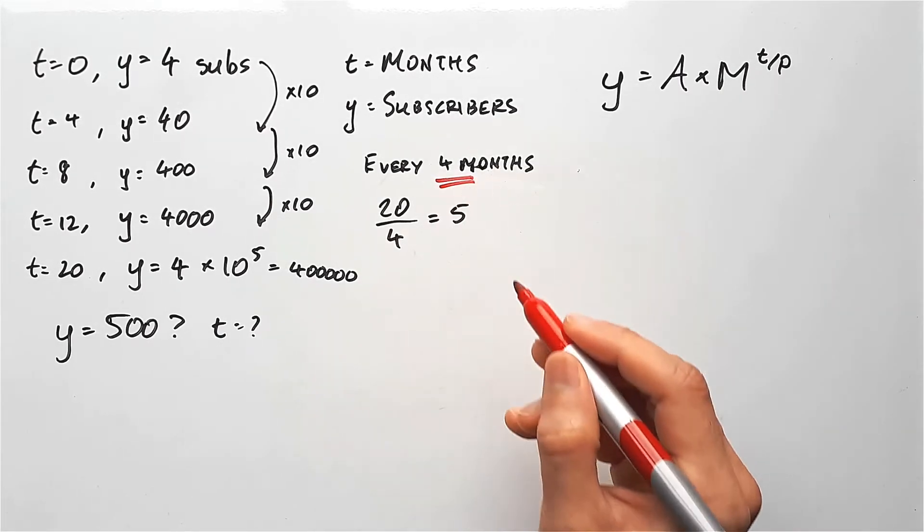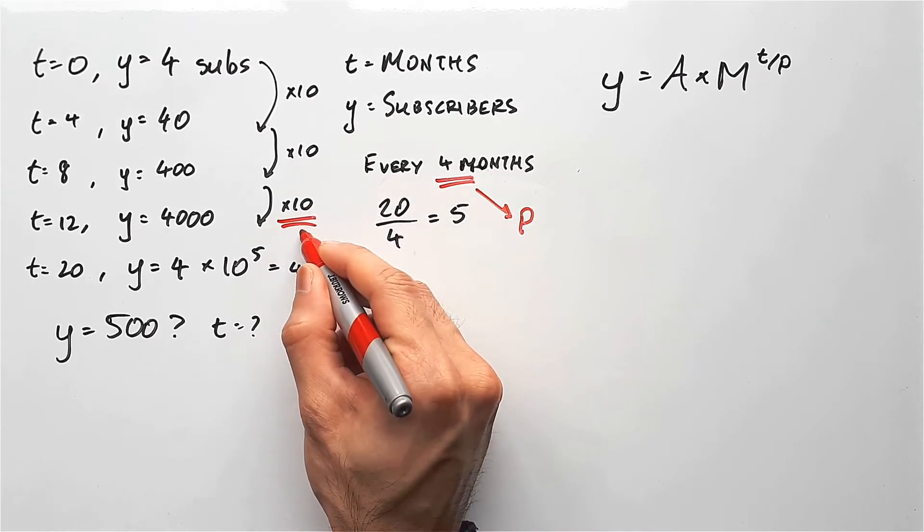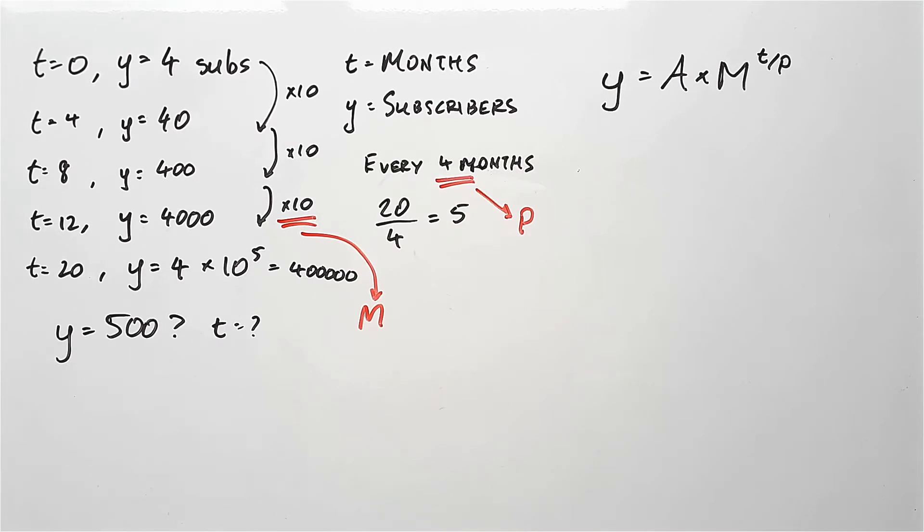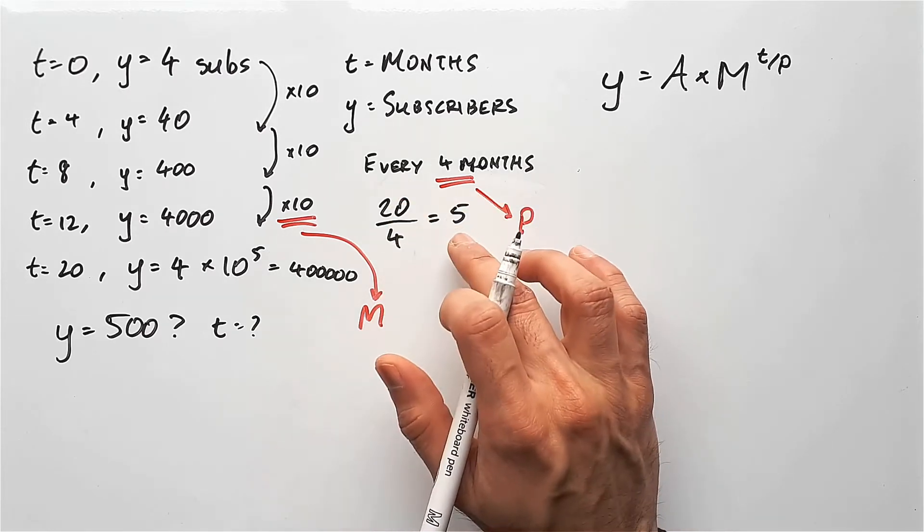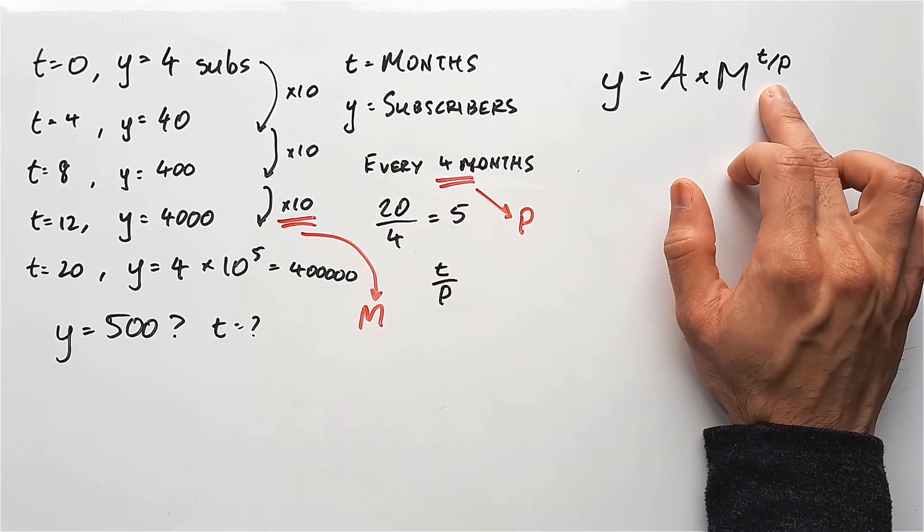So y is supposed to equal A times M to the power of t over p. This four months here is supposed to represent that period. And this 10 over here would be that multiplier that changes this amount every four months. And whenever you want to work out how many times you need to multiply by 10, for example, you take 20 divided by 4 to give you that amount of times. The formula is t over p. So that's where it goes into this formula. And M is 10.